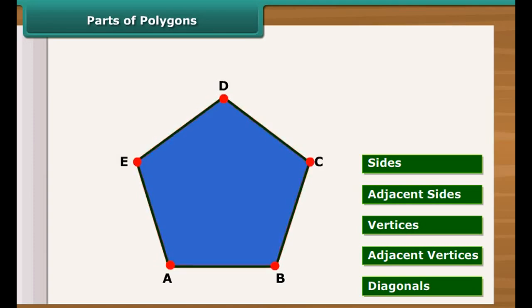The end points of the same side of polygons are called adjacent vertices. For example, A and B, B and C, C and D, D and E, E and A are adjacent vertices.